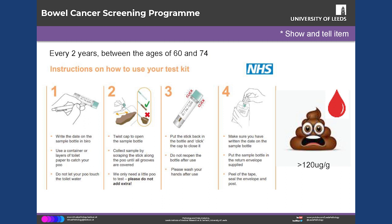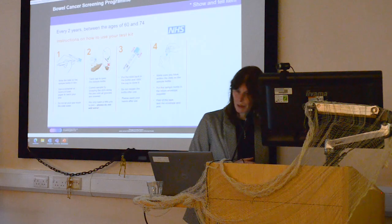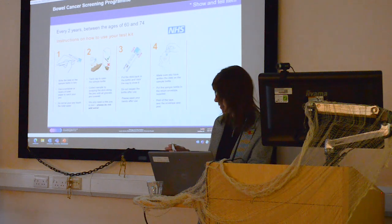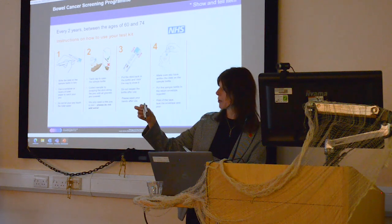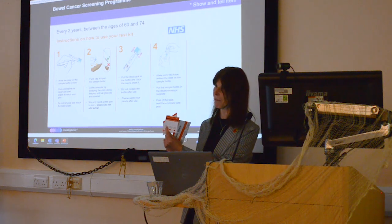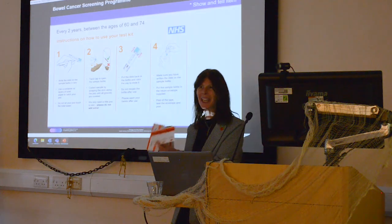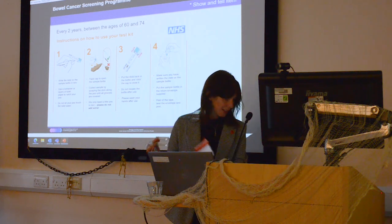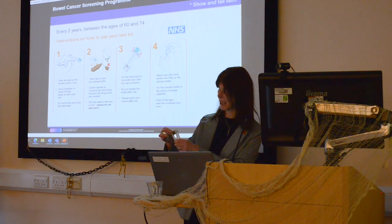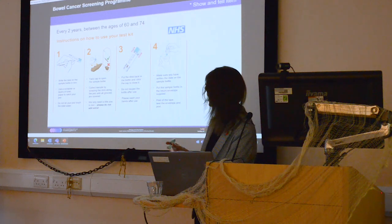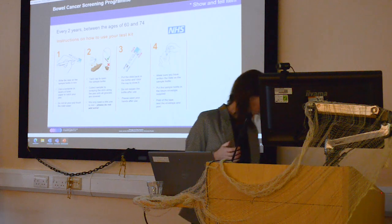Just to explain the bowel cancer screening programme: at the moment, every two years, between the ages of 60 and 74, you get one of these FIT devices sent through the post. In years gone by, they used to send screening cards — you'd lift up the flap, put a bit of stool on, and send it off. Now we've moved on, and you get this device — one single sample — which you pop in the post and it's analysed at a central laboratory. We're now screening from age 58, and in two years' time we should be down to 55.